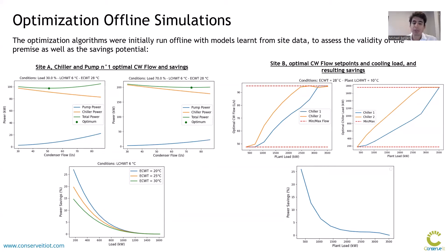These show quite high savings potential. On site B on the right, we see a case with two chillers running simultaneously in simulation, with the load per chiller and condenser flow per chiller showing the optimum for different values of plant load. For different plant loads, there are different optimums for each chiller for both the load and the condenser water flow. Optimizing all of this together holistically, the bottom right shows the potential power saving percentage, which is also quite high.